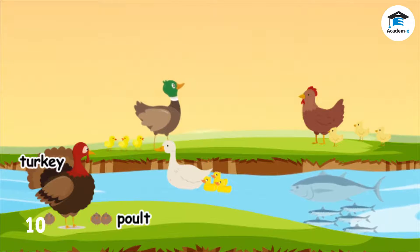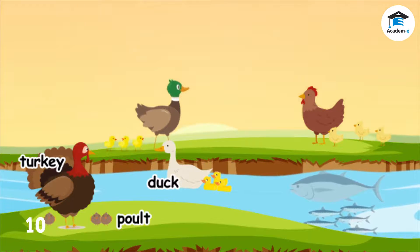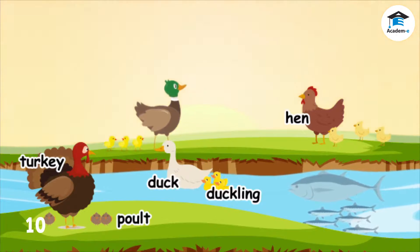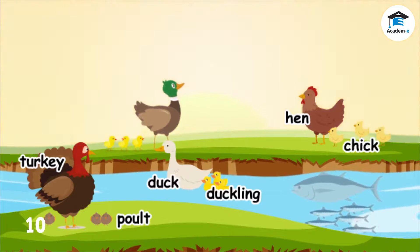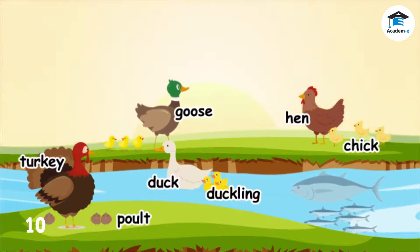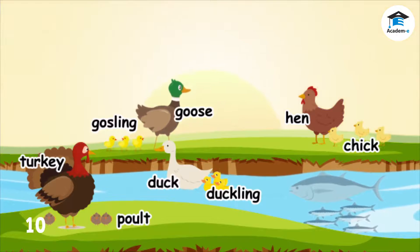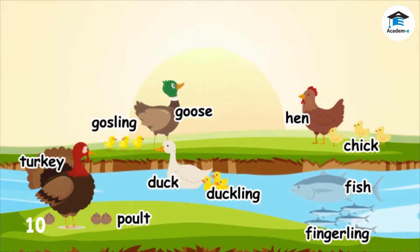The young of a turkey is a poult. The young of a duck is a duckling. The young of a hen is a chick. The young of a goose is a gosling. The young of a fish is a fingerling.